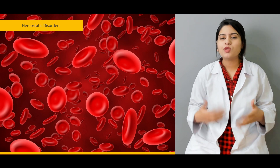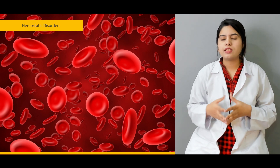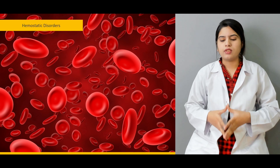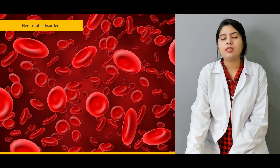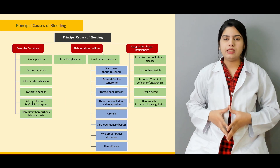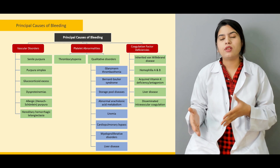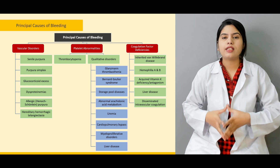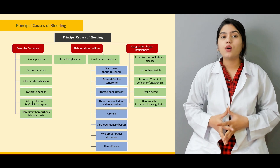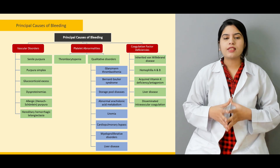By linking the normal hemostatic process with abnormal hemostatic disorders, we will examine how the normal process of hemostasis is affected by different defects and disorders that cause bleeding. We will discuss in detail how vascular and extravascular defects, platelet disorders, and coagulation factor disorders cause bleeding, and how they manifest.